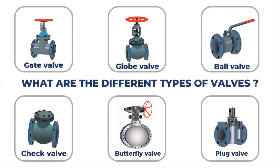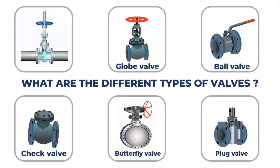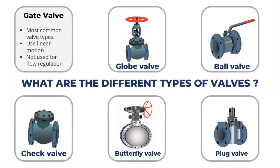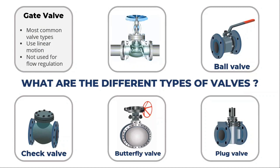The most frequently used valve types are gate valves, globe valves, ball valves, check valves, butterfly valves, and plug valves. The most popular kind of valve seen in process facilities is the gate valve. A linear path is followed by the closing gate to either obstruct or let fluid pass. Usually they are not utilized to control flow — instead they are utilized in the fully open or closed states.